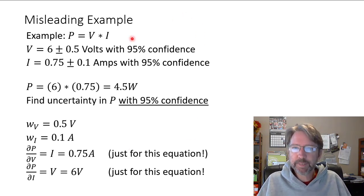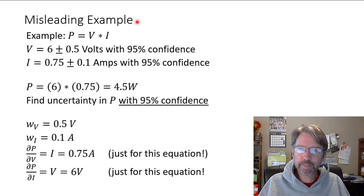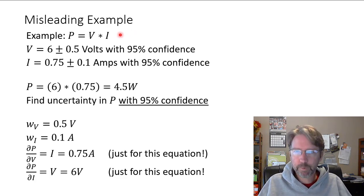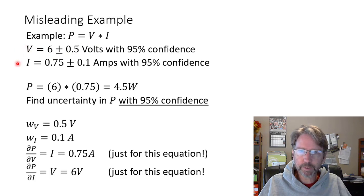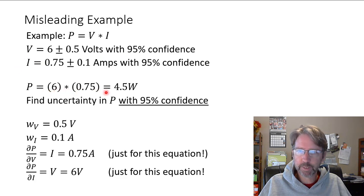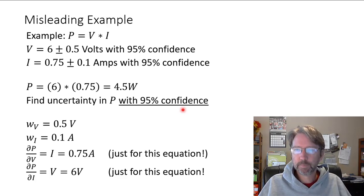Here's an example from the textbook — I'm calling it a slightly misleading example. It's correct, but I'll show the mistake people make when they try to extend it. We're calculating power as voltage times current with the same numbers as before: voltage 6 volts ± 0.5 V, current 0.75 amps ± 0.1 A, both at 95% confidence. We want the uncertainty in power with 95% confidence, so we must use the partial derivatives method — not the worst-case approach.